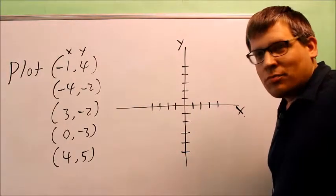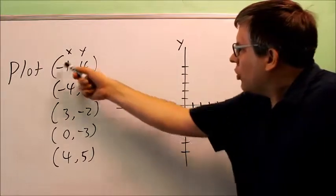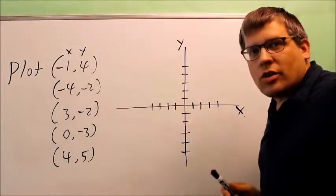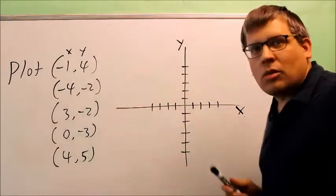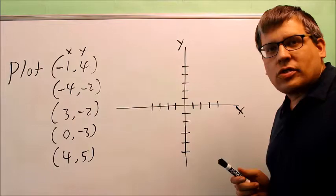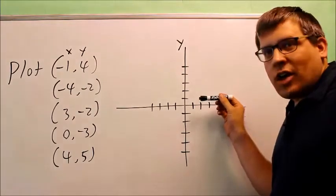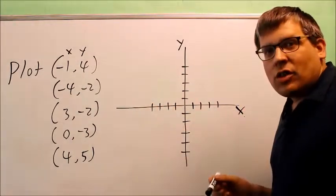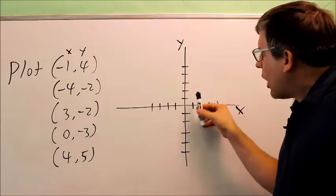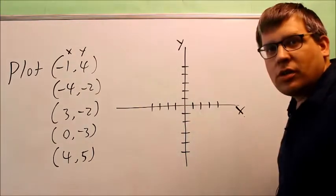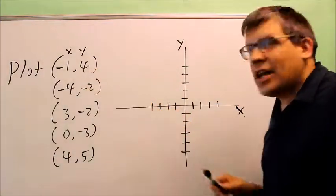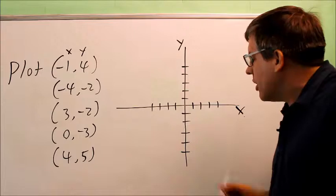We're going to plot these points. When you have a coordinate, the first number is the X coordinate and the second number is the Y coordinate. The way a coordinate system works is negative X values go to the left, positive X values go to the right, positive Y values go up, and negative Y values go down.